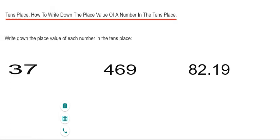example one. The first one we've got is 37, so we count two places from the end. We've got seven in our ones and three is in our tens place, so here we've got three tens. Three tens is the same as 30, so that is our place value. Let's do the next one.